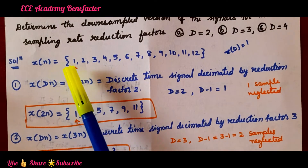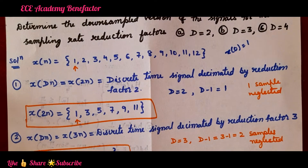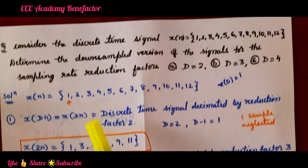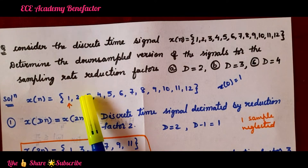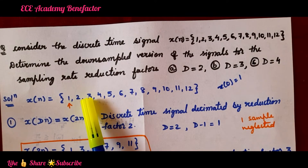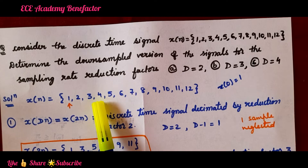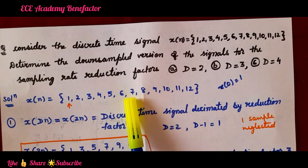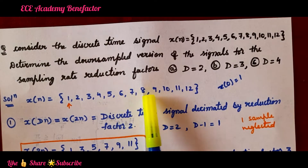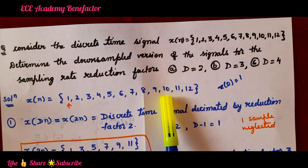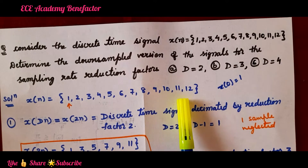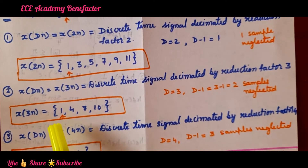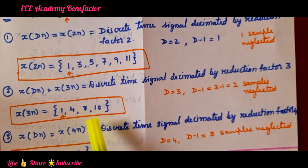From the sequence, we write 1 as it is, then leave 2 samples and write 4. After 4, leave 2 samples and write 7. Leave 2 samples and write 10. So x(3n) = {1, 4, 7, 10}.